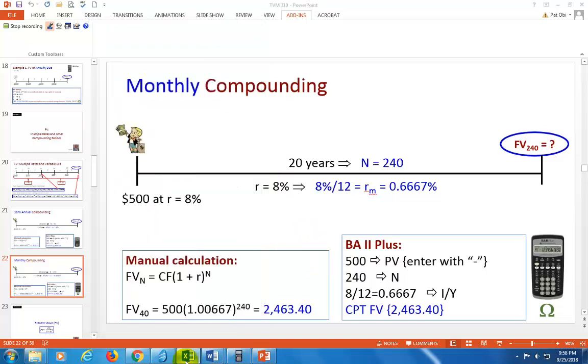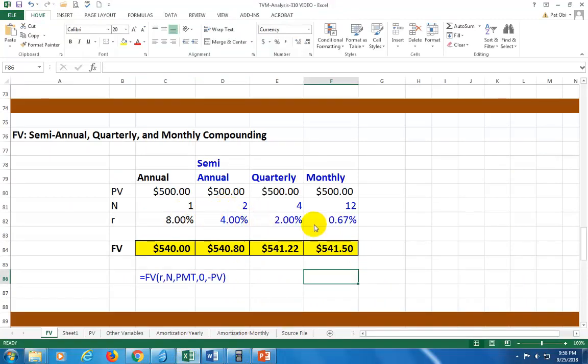So on spreadsheet, this is how your data would look like, right? So for semi-annual would be two periods, quarterly, four periods within a year, monthly, 12 compounding periods within a year. And this is the formula that you have seen, the function that you've seen before for the calculation of these future values.